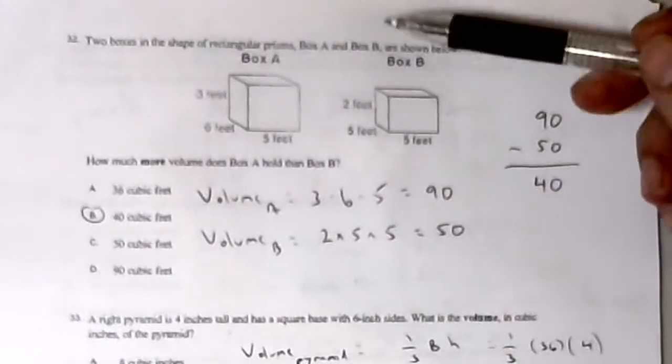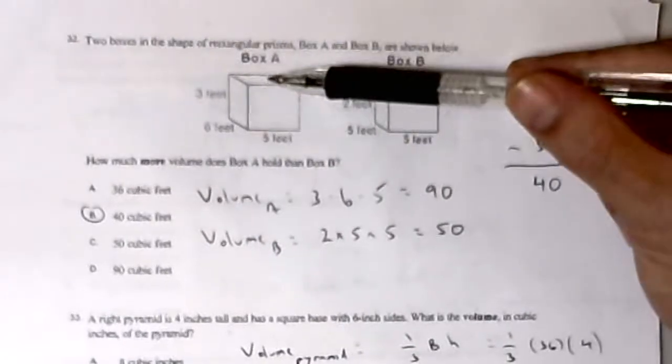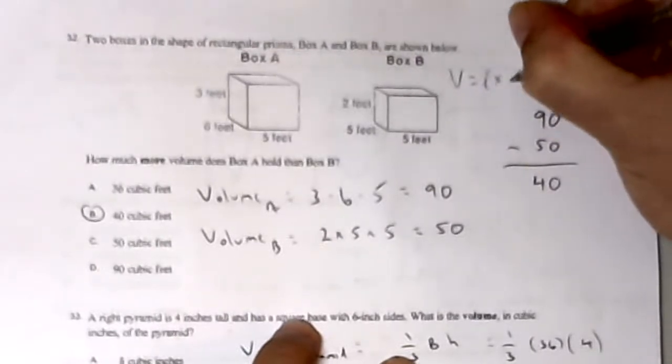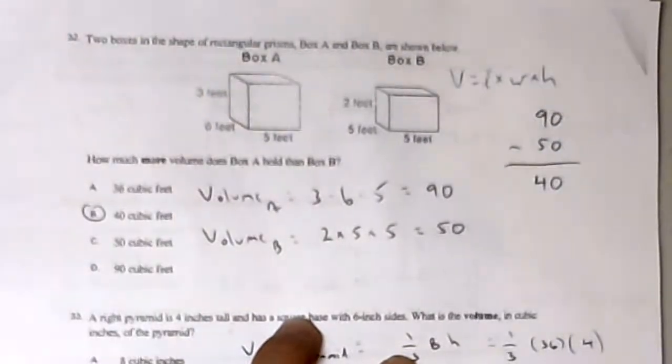Problem 32: Two boxes in the shape of rectangular prisms A and B are shown below. How much more volume does box A hold than box B? We're going to find the volumes of both boxes. For a rectangular prism, volume is length times width times height.